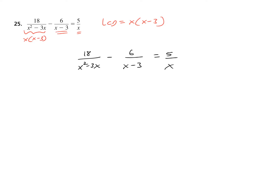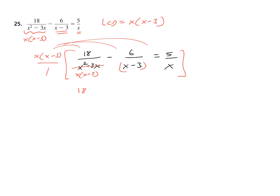Keeping that in mind and the fact that this denominator factors that way, group the entire equation and multiply by the LCD over 1 — three distributions, canceling out three times. The first distribution: the entire denominator cancels out, leaving me just the numerator 18. Minus 6 over X minus 3 — the binomial X minus 3 simplifies out, leaving the X. So it's actually minus 6X. And now the X simplifies out, leaving me 5 times quantity X minus 3.